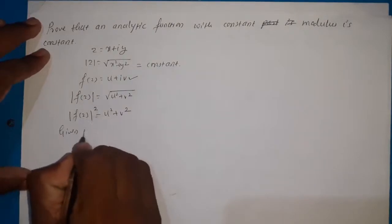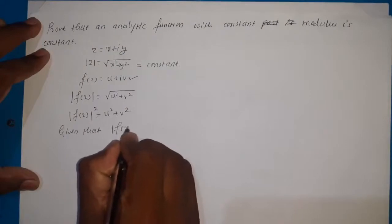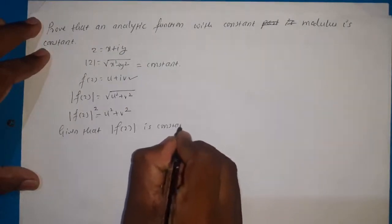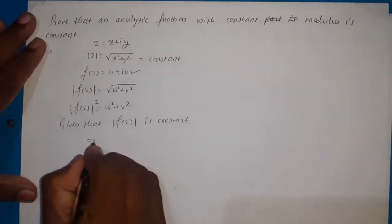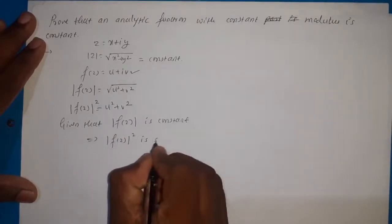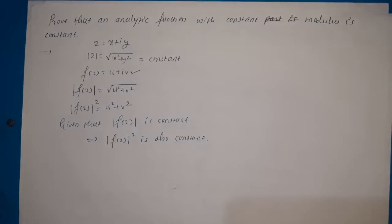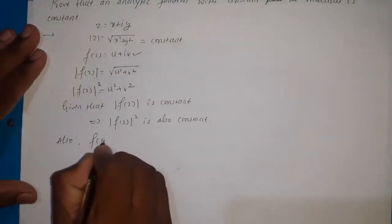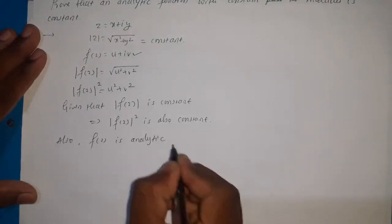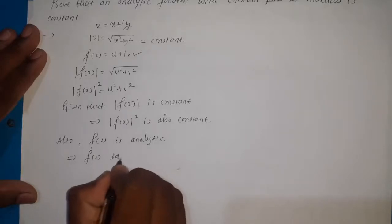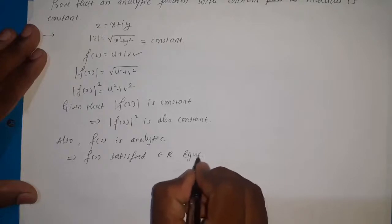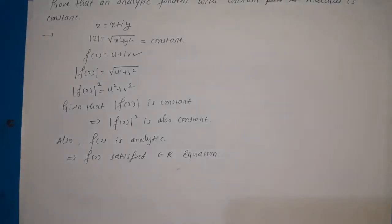Given that |f(z)| is constant, it implies that |f(z)|² is also constant. Since f(z) is analytic, it implies that f(z) satisfies the Cauchy-Riemann (CR) equations, by the condition of analyticity of a function.